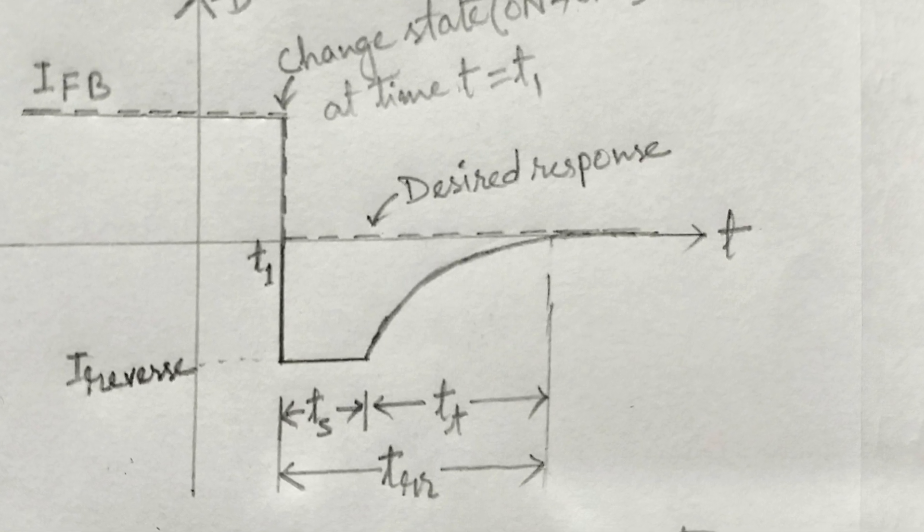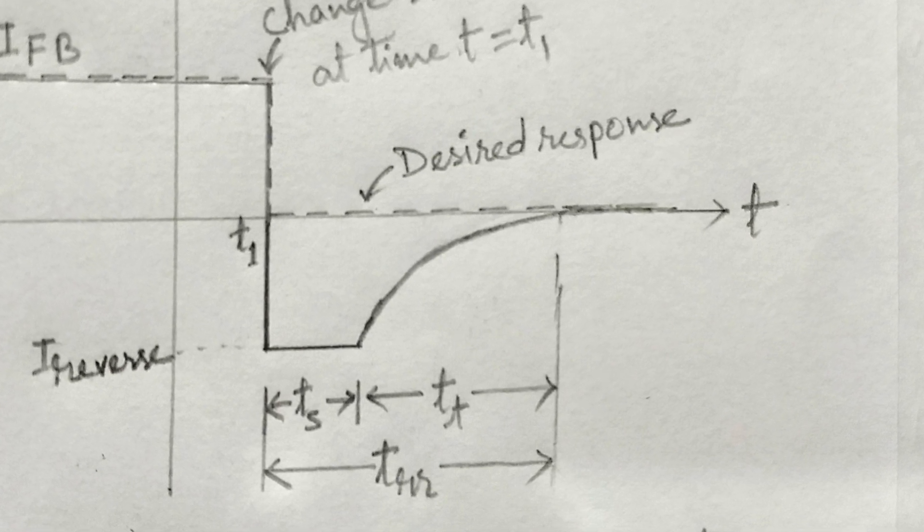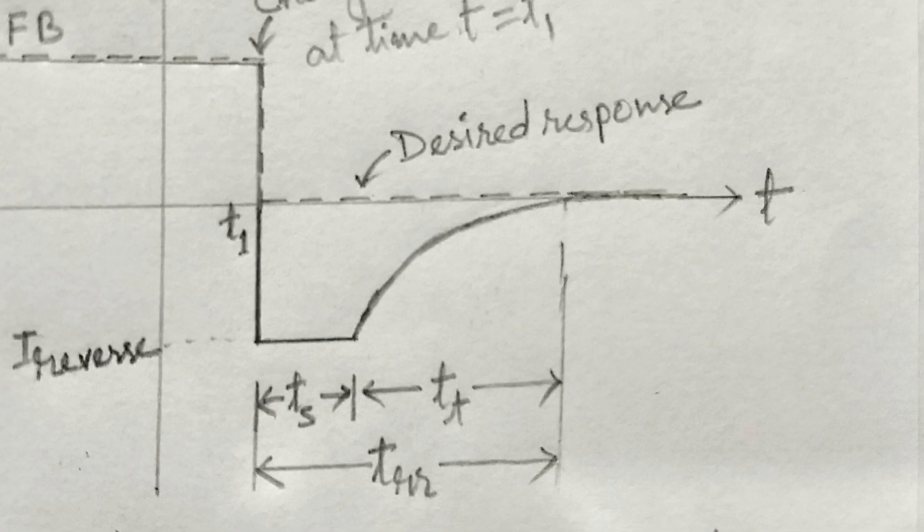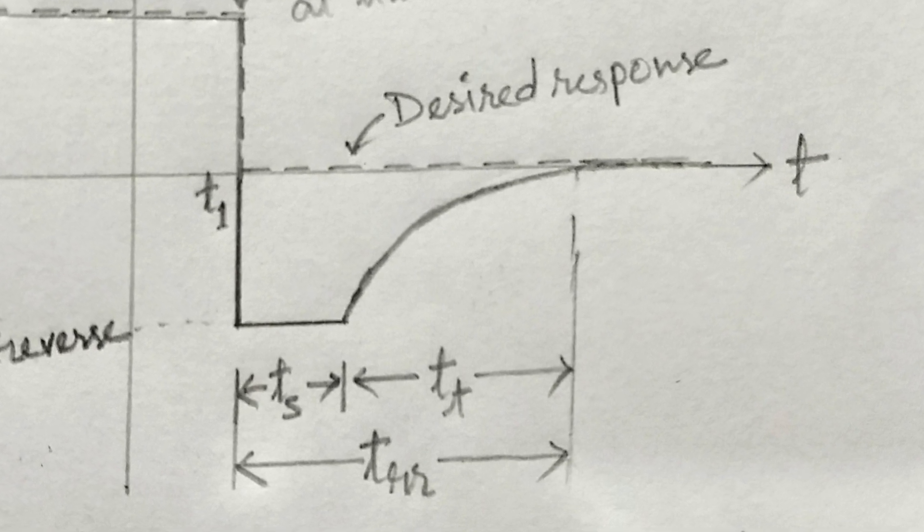After the storage phase, the reverse current will decrease to attain the non-conduction state. This period is denoted TT, that is transition time or transition interval.